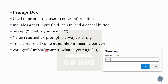For example, prompt('What is your name?') or prompt('What is your age?'). The result is always a string, so we use the Number() function to convert it. For instance: Number(result) converts the string returned by prompt into a numeric value.